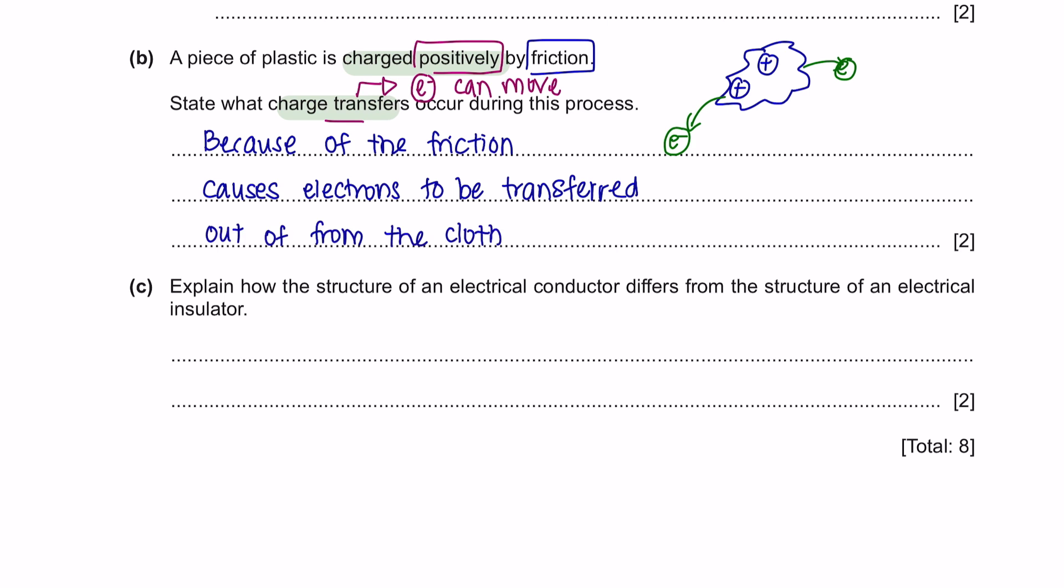Question C. Explain how the structure of an electrical conductor differs from the structure of an electrical insulator. An electrical conductor means that the object can conduct electricity. For an object to be able to conduct electricity, it must have free-moving electrons so that it can carry the charges from one point to another point.